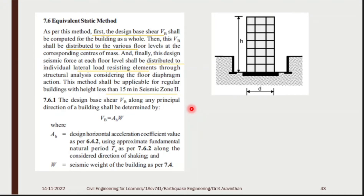VB is the base shear — the earthquake force exerted at the base of the building. Each and every floor carries shear force. During an earthquake, the building moves to and fro. Scientifically, something must push the building to cause this movement. According to the code book, that force is shear force — it is the shear force that causes movement of the structure.